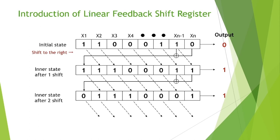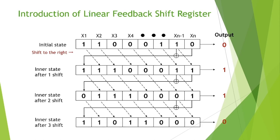We shift one more time and perform the XOR computation. The new inner states became: 1, 1, 0, 1, 1, 0, 0, 0. Giving it another rising clock, we get a new output result of zero. From this diagram we can see how an LFSR works.